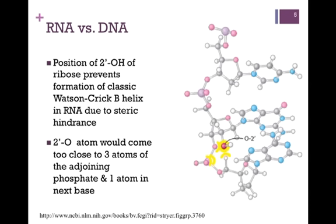The position of that two-prime OH of the ribose prevents the formation of classic Watson-Crick B-helices in RNA because of steric hindrance. The two-prime oxygen atom would come too close to three atoms of the adjoining phosphate and one atom in the next base, as highlighted in the figure to the right in yellow. So although RNA can form Watson-Crick base pairs of complementary sequences due to hydrogen bonding interactions, it cannot form a standard B-type helix — it forms other structures, as we'll see later.